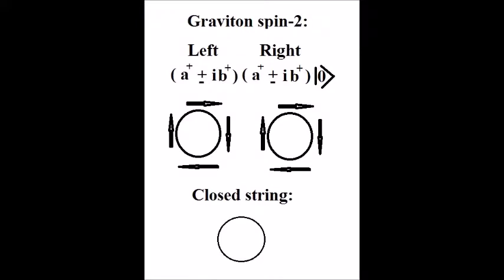The graviton is thought to be a spin-2 particle. String theory depicts it as a closed string.